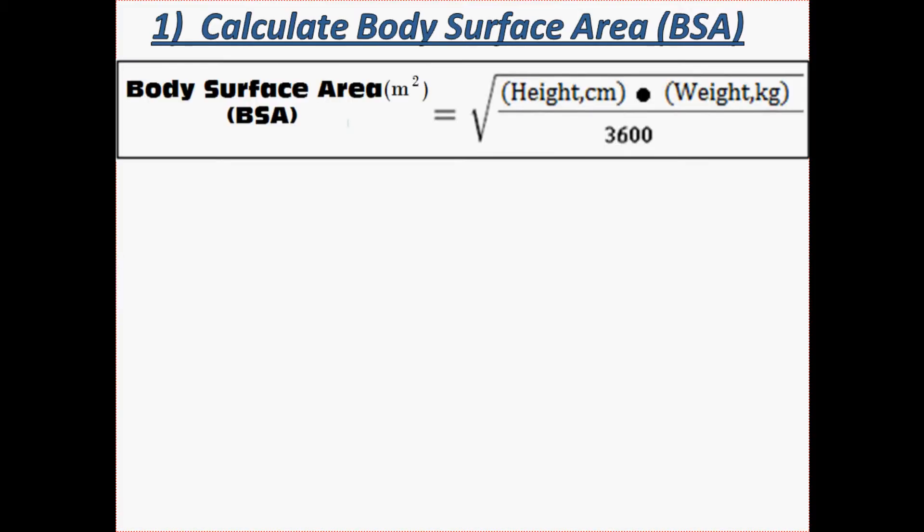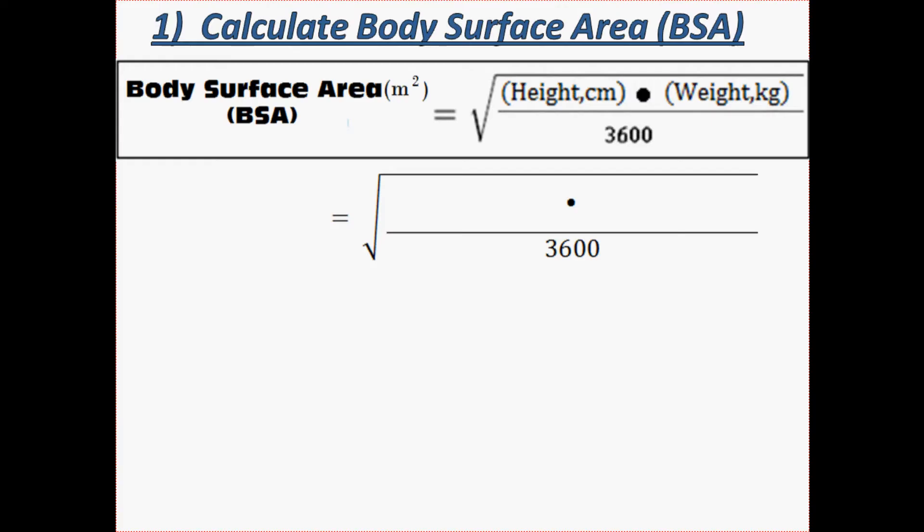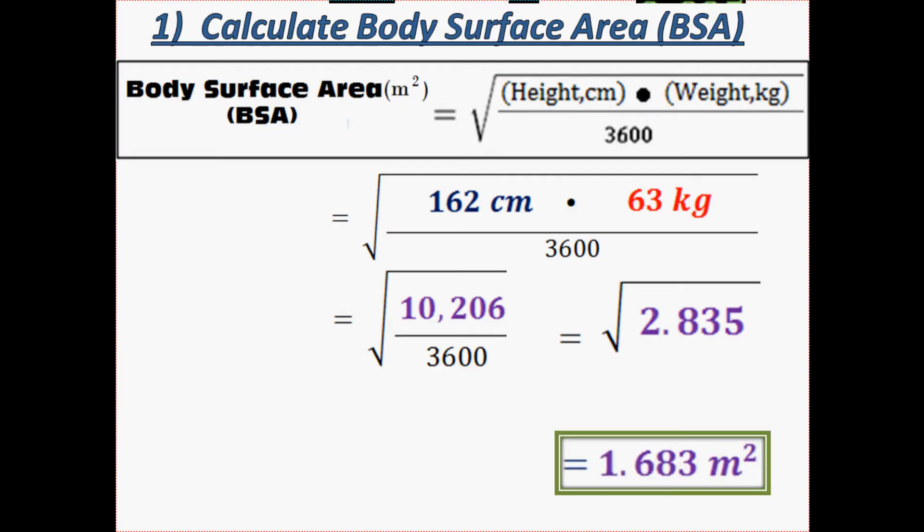In order to calculate my expected vital capacity, I would first need to calculate my body surface area. To do that, I have this formula, and there's other formulas out there, but this is the one I'm going to use. I would first need to multiply my height and my weight, and I get 10,206. Then I divide by 3600, which gives me 2.835. Then I take the square root of that number, which gives me 1.683 meters squared.